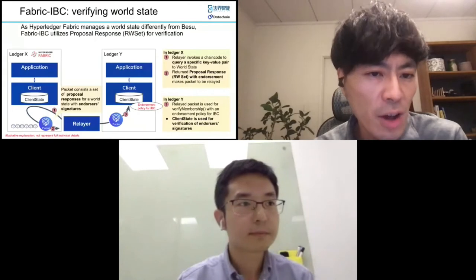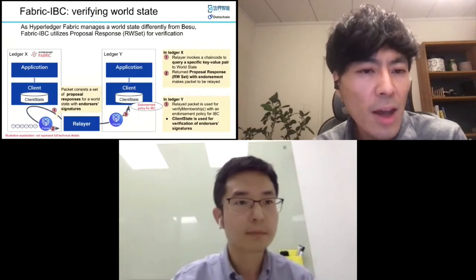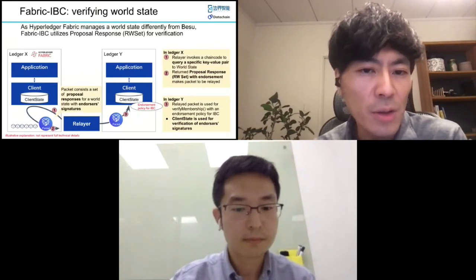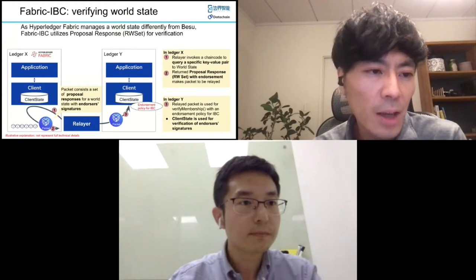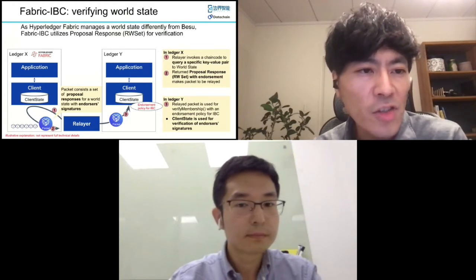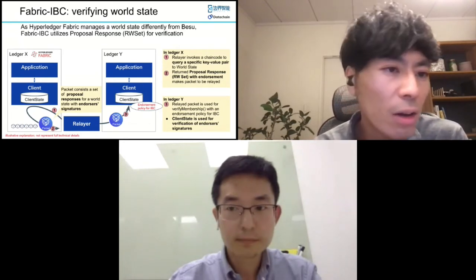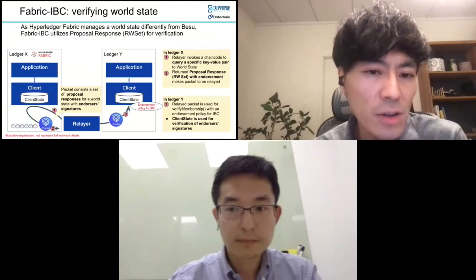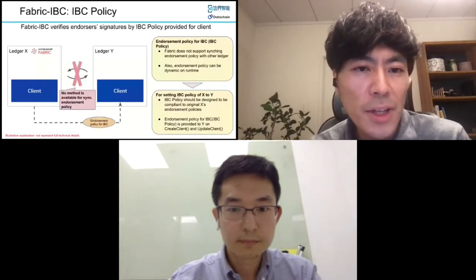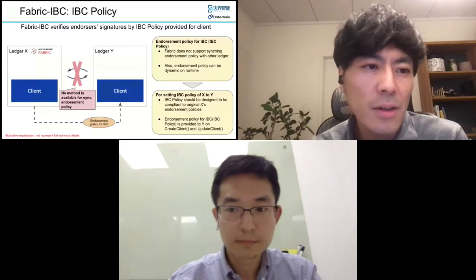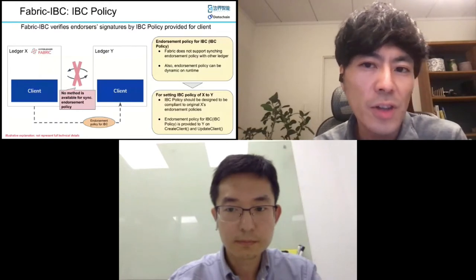In LedgerX, a relayer invokes a chaincode to query specific key-value pairs from its world state, and the returned proposal responses from endorsers that satisfy an endorsement policy make a packet to be relayed. Then in LedgerY, the packet is verified using VerifyMembership with an endorsement policy for IBC. The client state uses endorsed signatures for verification. Regarding the endorsement policy for IBC, Hyperledger Fabric does not support on-chain synchronization of an endorsement policy with other ledgers.